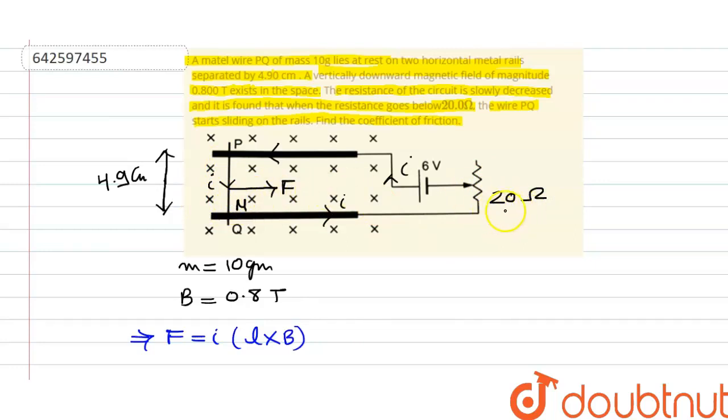Before 20 ohm, wire was not sliding because magnetic force was not sufficient to overcome the frictional force. So on this wire, friction force is acting in the opposite direction.